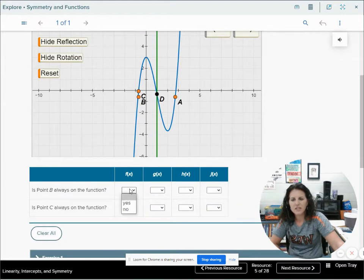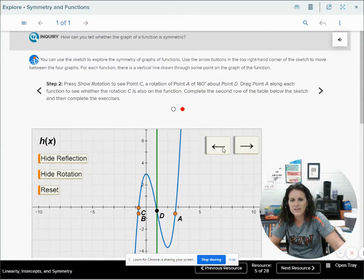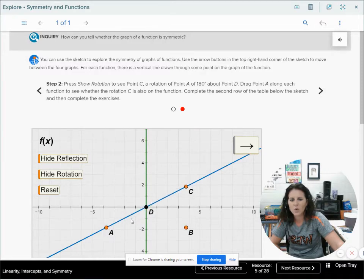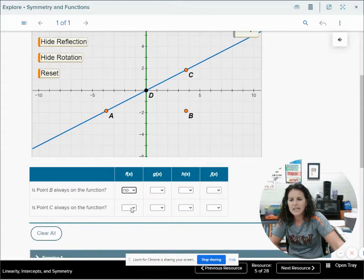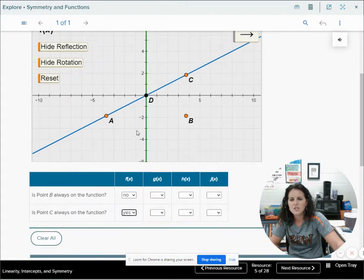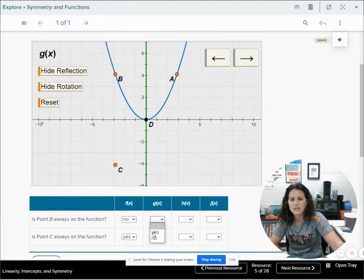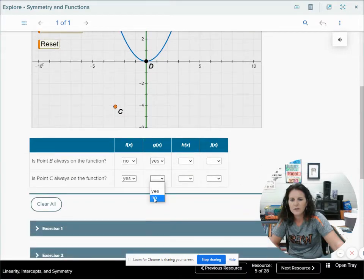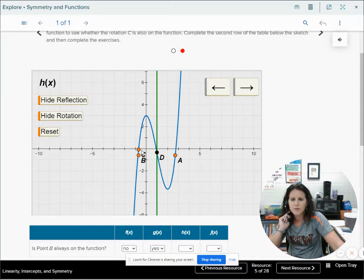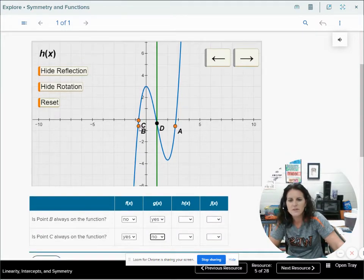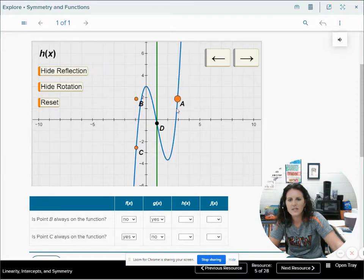Let's look at the next one. What do you think is going to happen with my reflection? It's going to be on there part of the time, sometimes but not very often. How about the rotation? My rotation is always on there. So we can fill in the blanks. Is point B always on the function? Nope. Was point B always on there? The correct answer is no. Was point C always on my function? Yes.